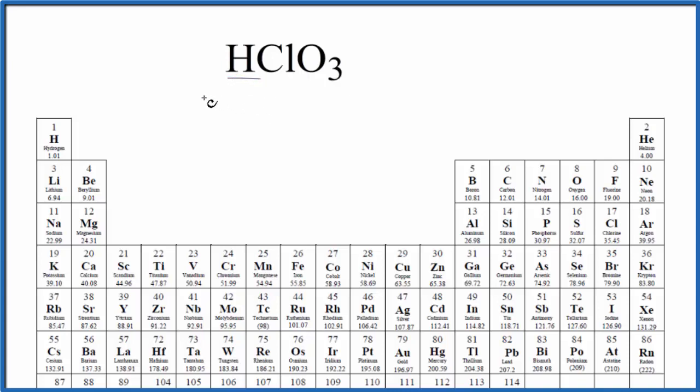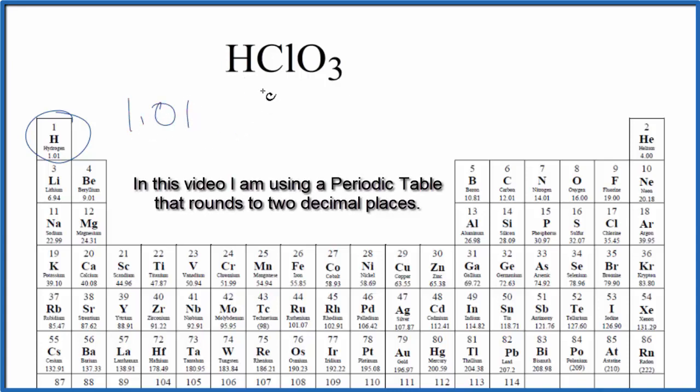On the periodic table we look up hydrogen. Hydrogen is 1.01 and the units are grams per mole. I won't write that each time. Let's just write that at the end. We have one hydrogen atom.